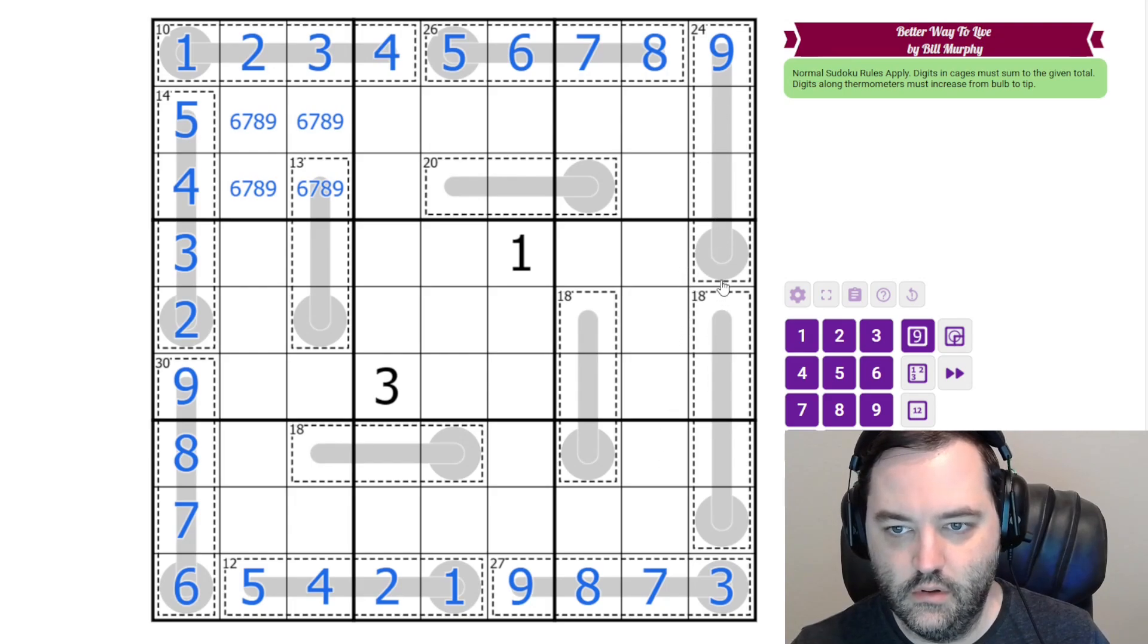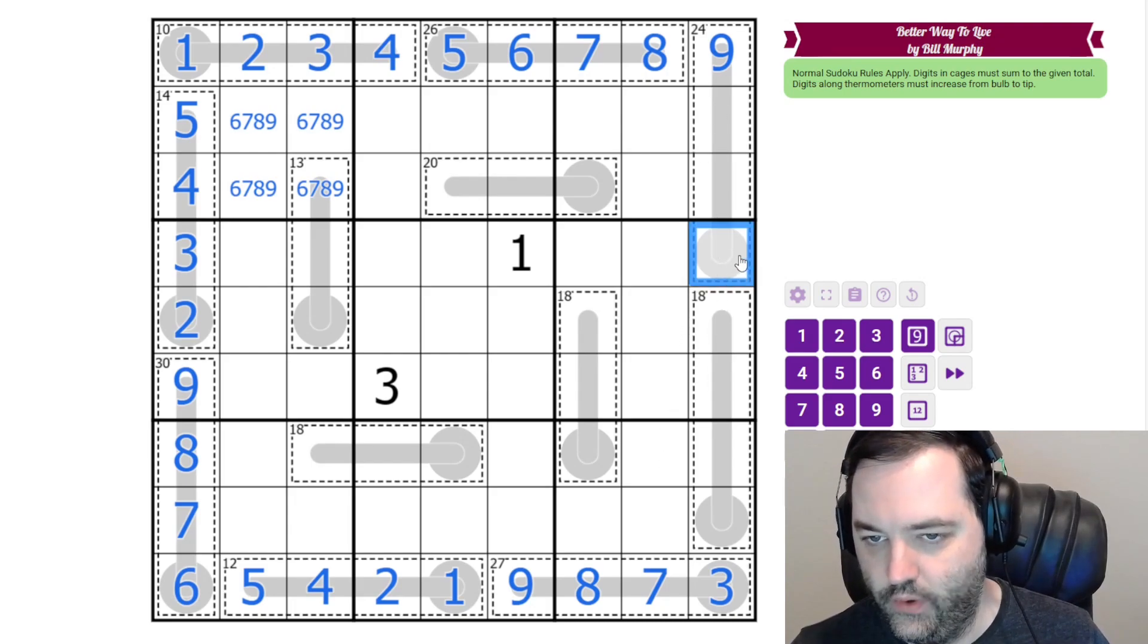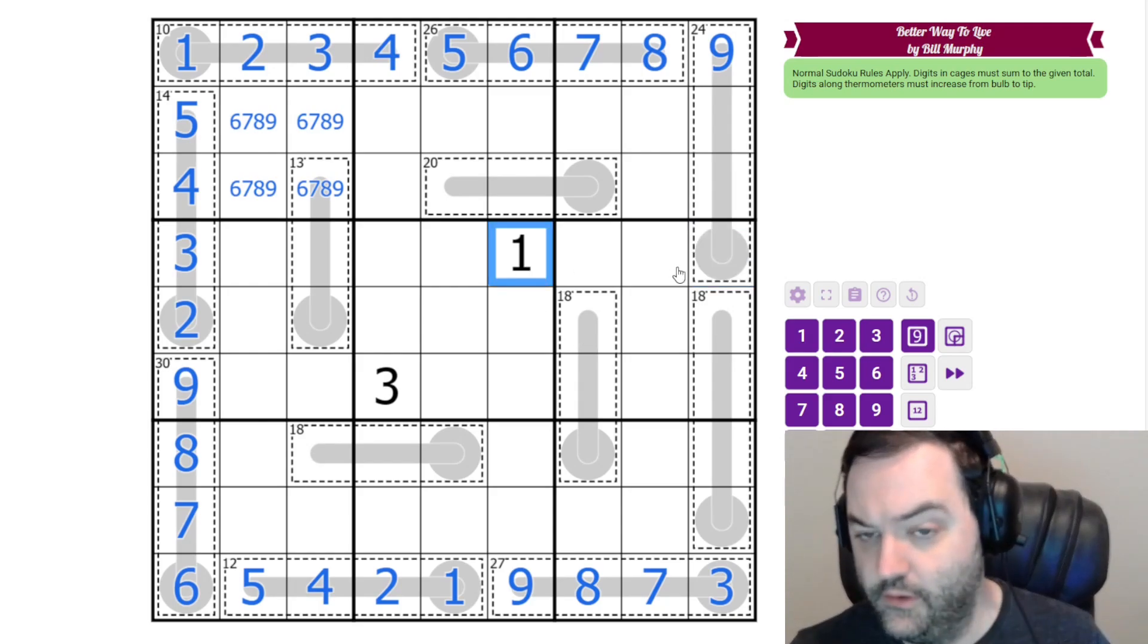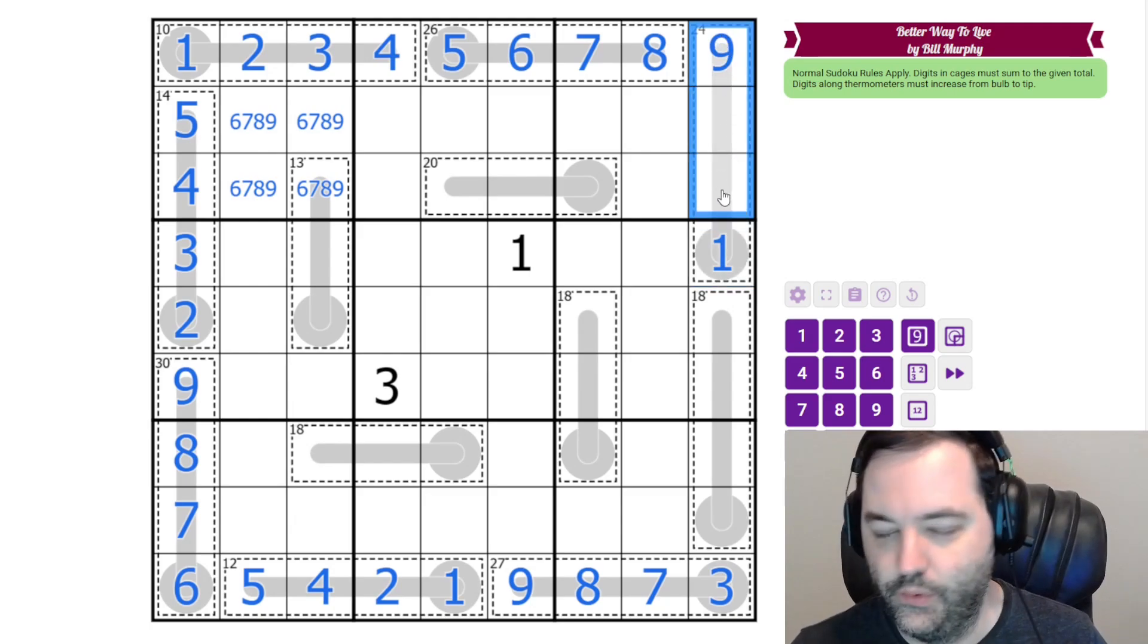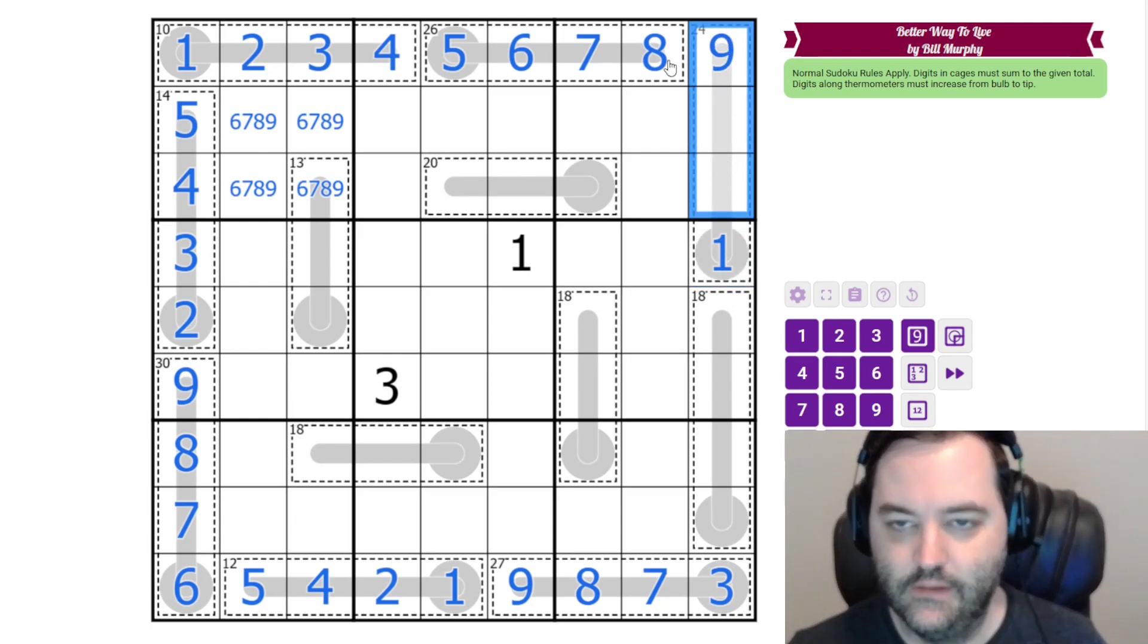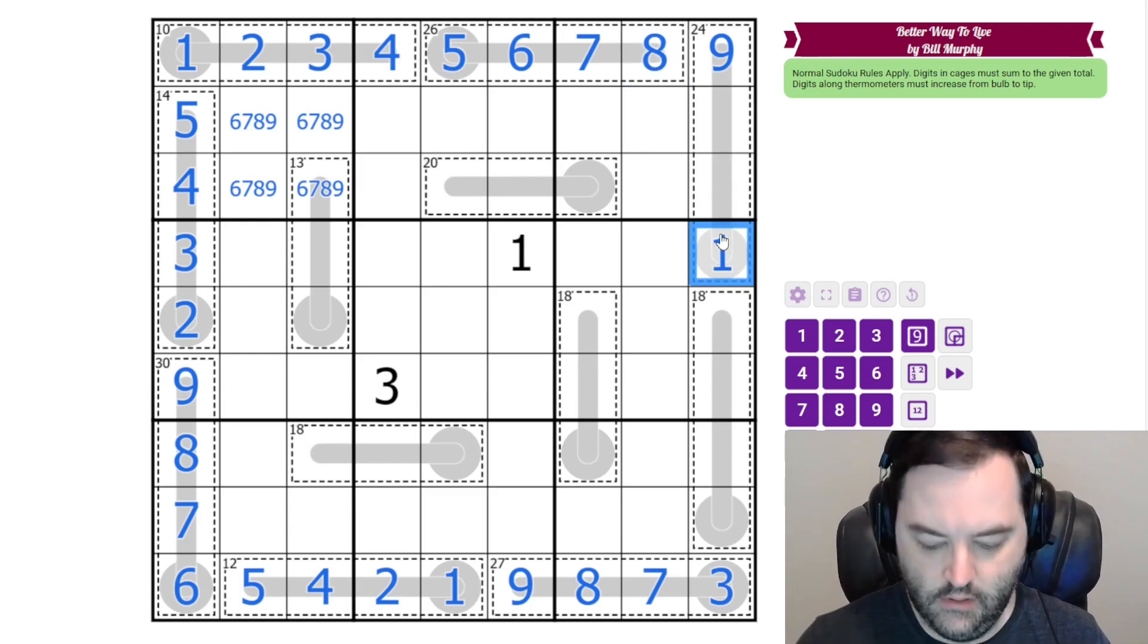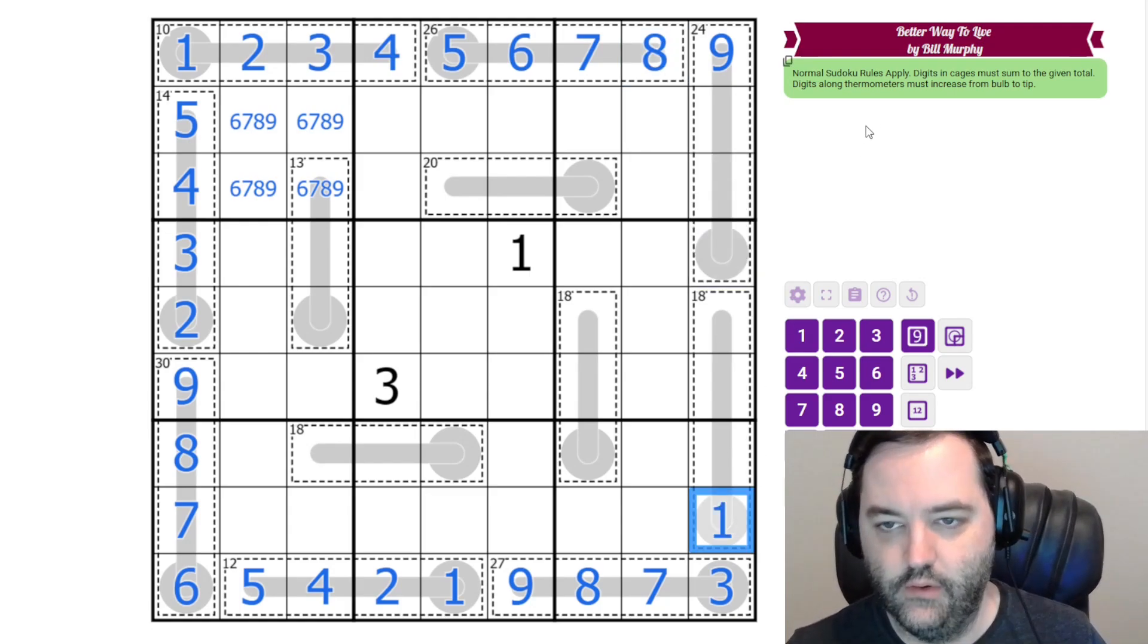All right, we can't put a one here for multiple reasons. One, there's a given right there, but also it would break this cage. If we did have a one here, these would have to sum to 23, and the only way to do that is six, eight, nine, and there's an eight in the cage already. So our one's not there, it's down here.